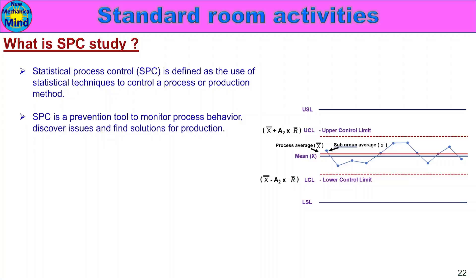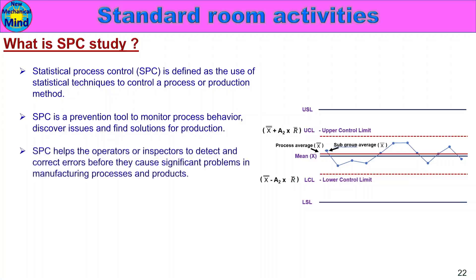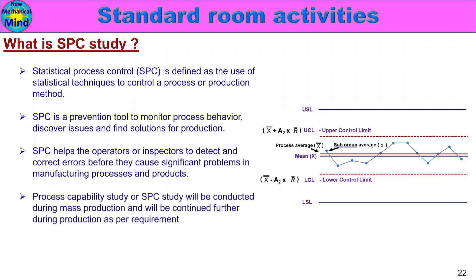SPC helps control issues and close out-of-spec occurrences. SPC helps the operators or inspectors to detect and correct errors before they cause significant problems in manufacturing processes and products. The study is conducted by the operator or inspector to detect and control manufacturing process problems.